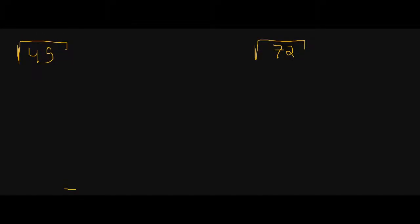Let's go ahead and look at our first example: the square root of 45. One thing we're going to need — and I'll write it here — is this conjecture: the square root of A times B is equal to the square root of A times the square root of B. This is one we went over in class together.